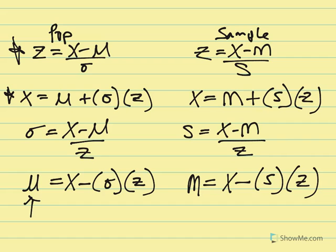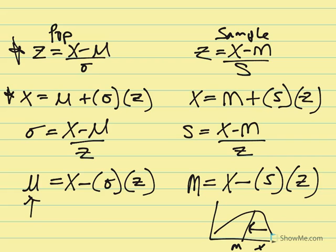When solving for X, we use the mean and add that product. When working backwards to find the center, we subtract that product from the X-value, whether we're above or below the mean. These equations are helpful, but I recommend using basic algebraic skills to solve for missing variables, relying on these to aid you in homework, quizzes, or the exam.